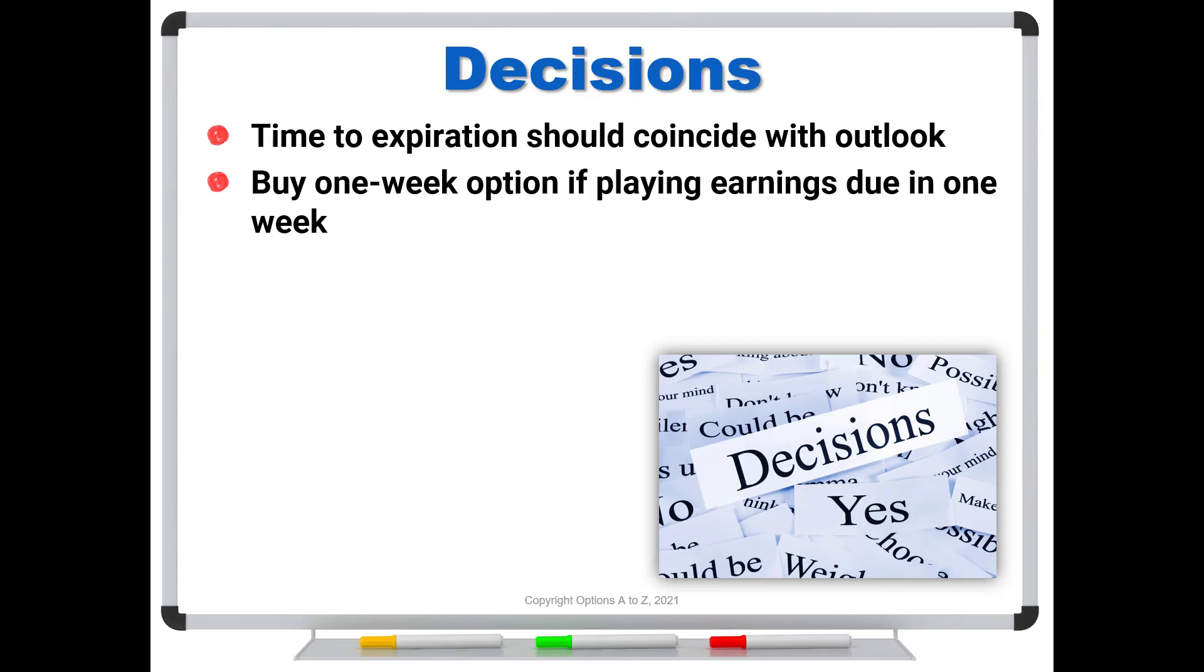What you don't want to do is go out and buy a two-year LEAPS option, because it's just not going to respond. So if you're correct, you're going to find that you're not going to be as profitable. As another example, you might buy a 90-day option if you're playing a swing trade over the next three months. You wouldn't want to play a weekly option and keep rolling it for 90 days.